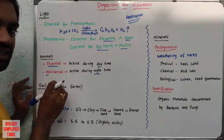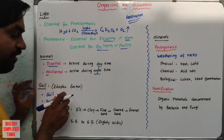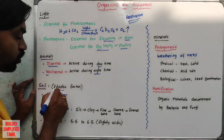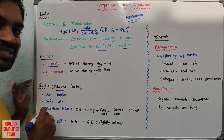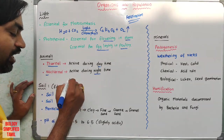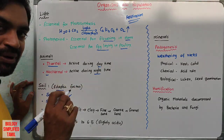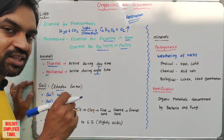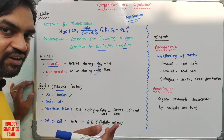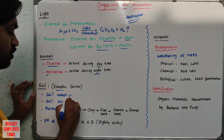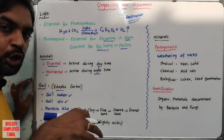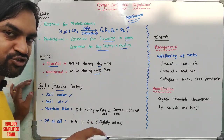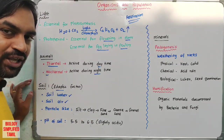Soil is also an abiotic factor, also known as the edaphic factor. Soil water is important for plants. Plants absorb capillary water to survive. Soil roots need oxygen for respiration — roots breathe through the soil.